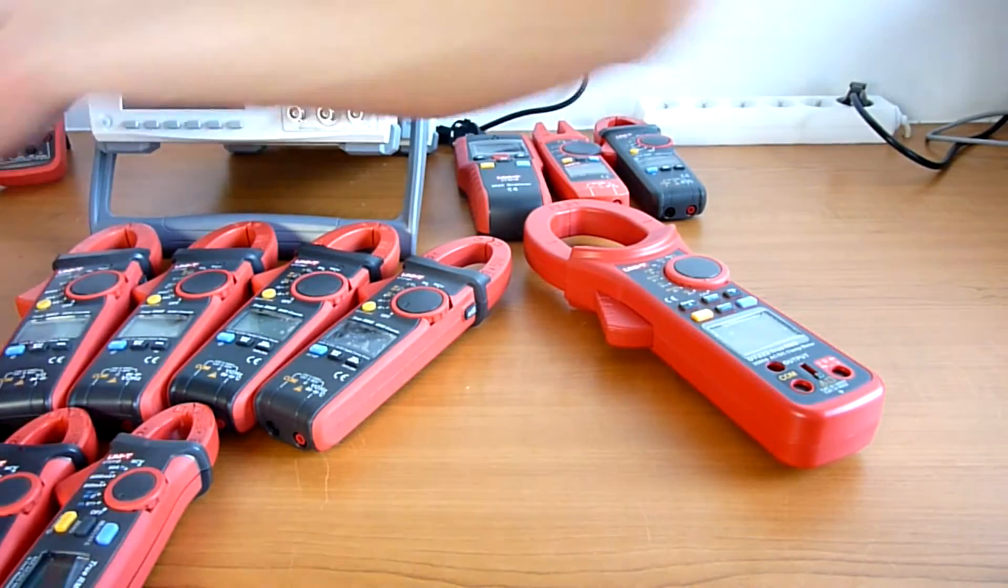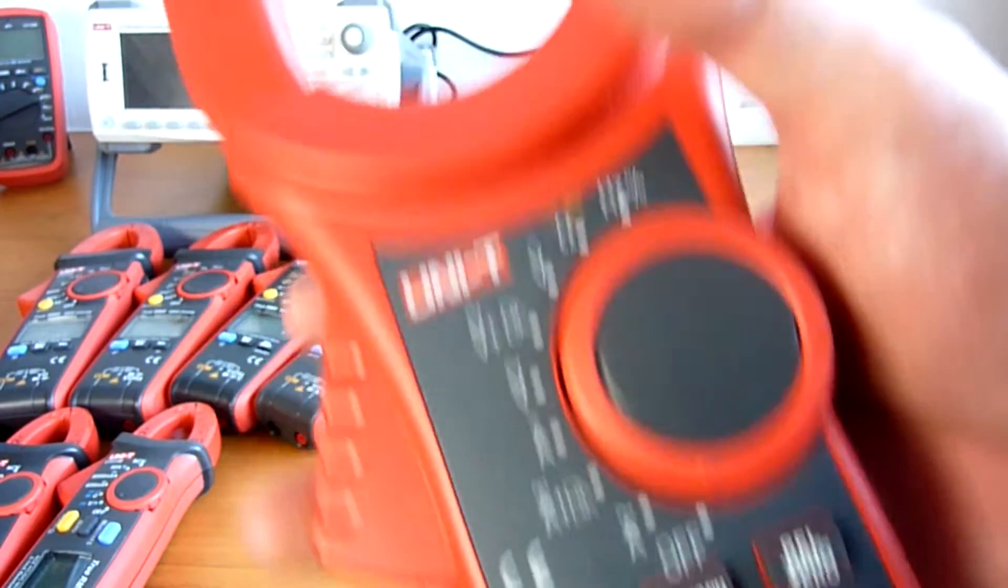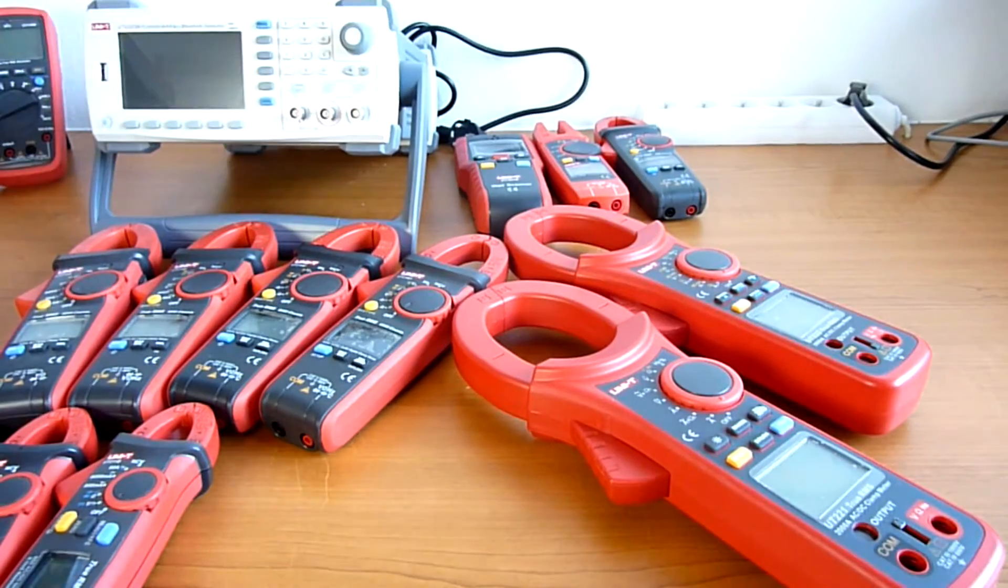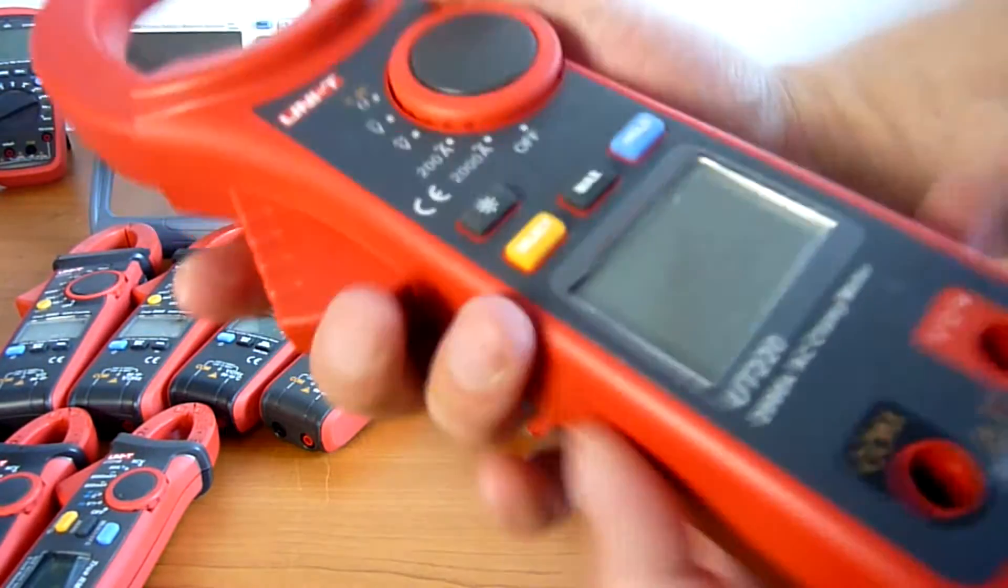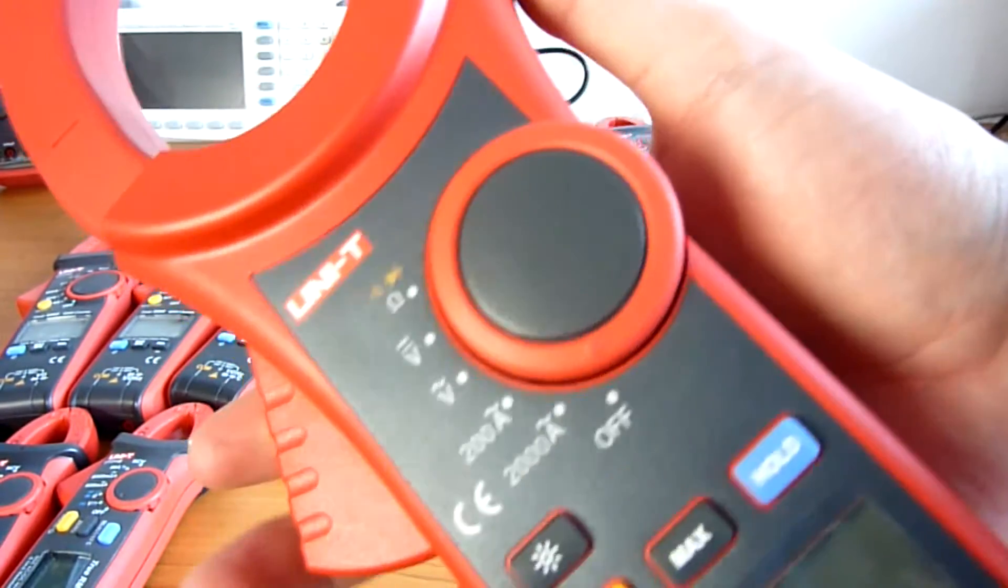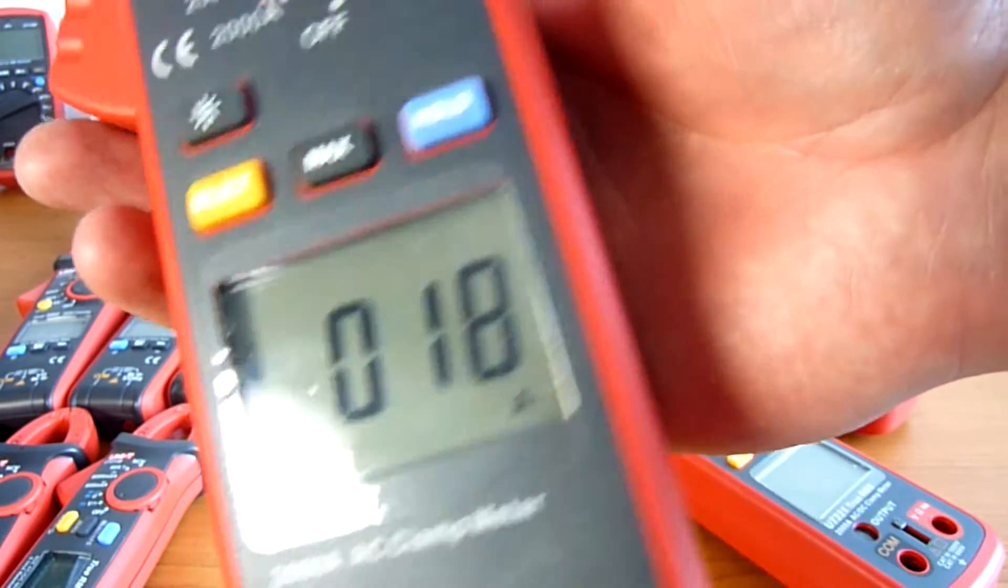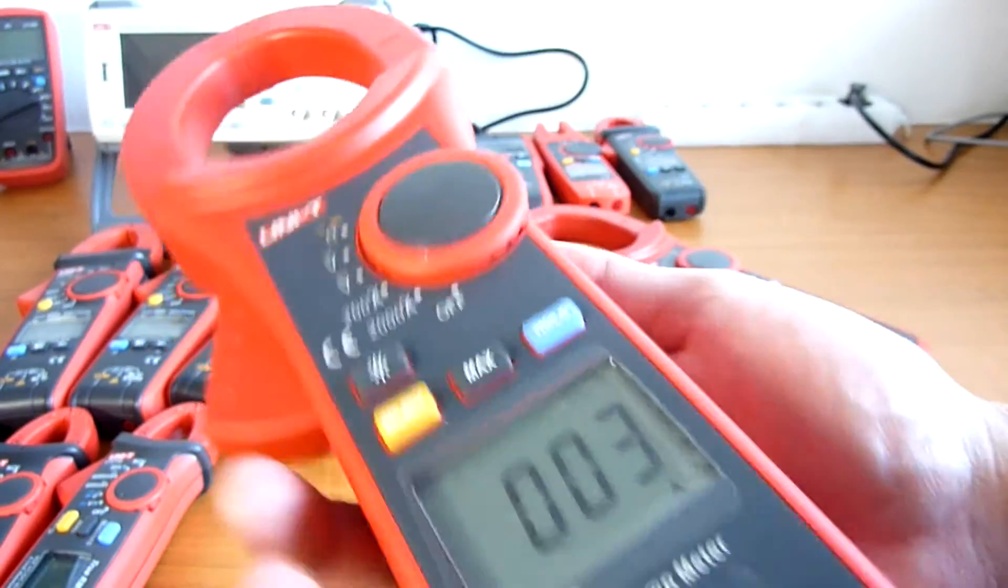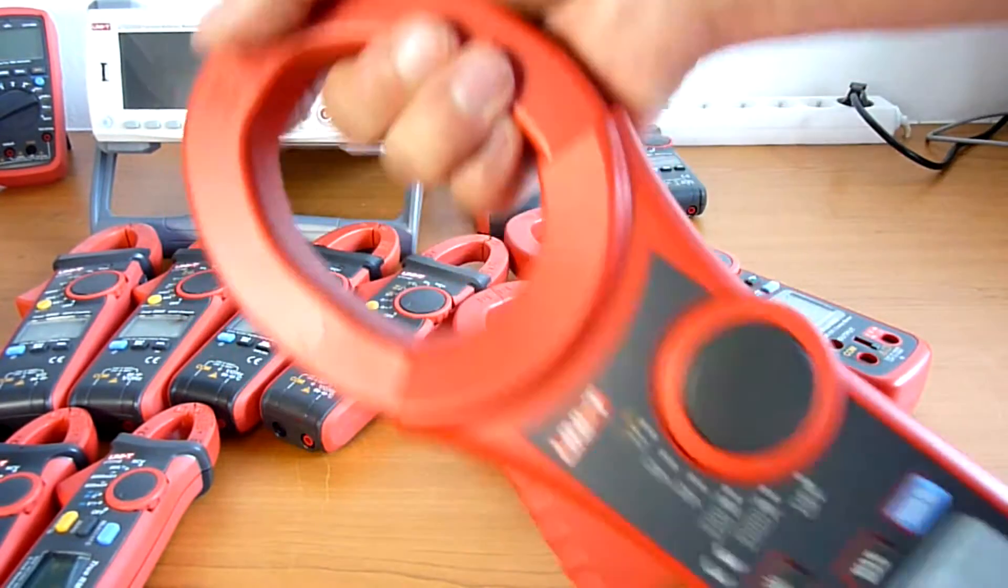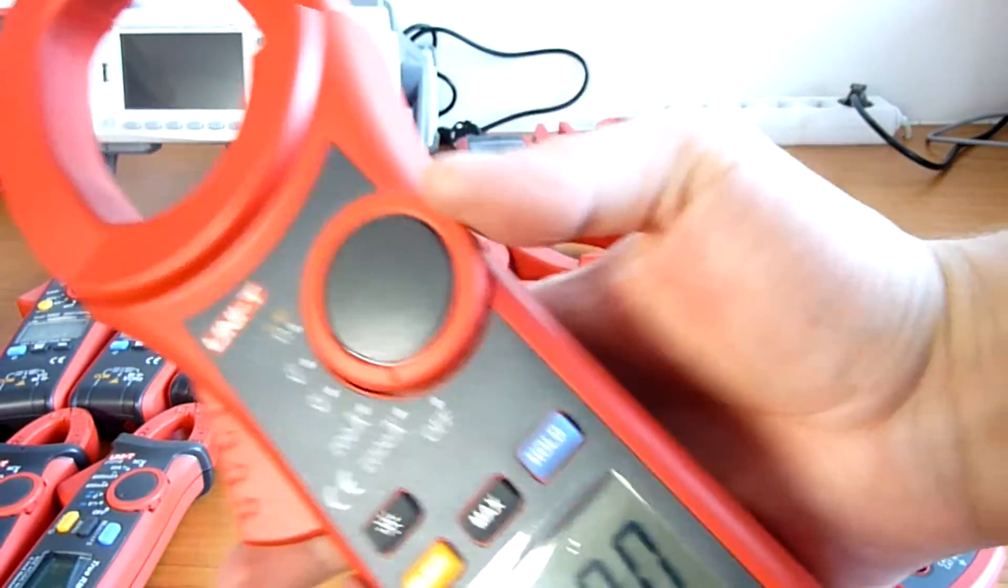Besides that, we have a 221 with slightly lower current, only 2000 amperes. And also the cheap version. 2000 amperes but only AC and without the data logging, without the triple screen, without the output. But it's still the same huge clamps. 2000 amperes but the price is much lower. So this one is like the economy version.